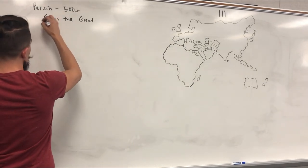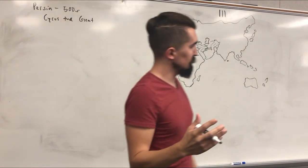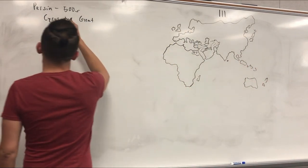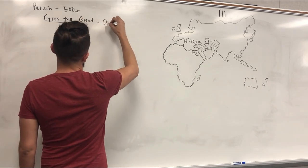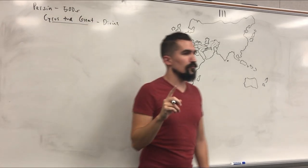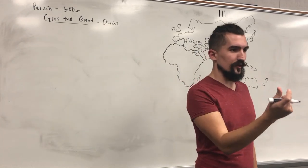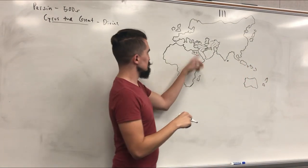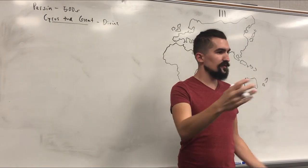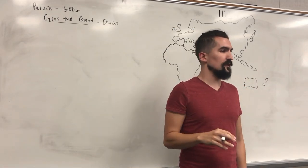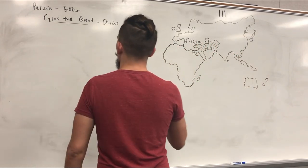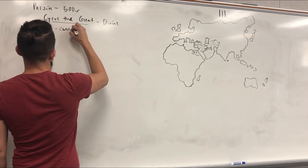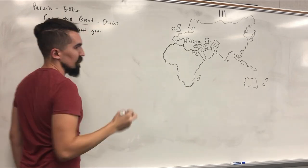So Cyrus the Great begins a string of Persian dynastic emperors — you've got Darius, Xerxes, like the ones you saw in 300. Cyrus the Great ruled as a divine king, like a god. The reason we care about the Persians is they set up that centralized government administration that governments still use today. Before, it was just city-states taking over other city-states, collecting tribute and slaves — not very well organized. The Persians were really, really well organized.